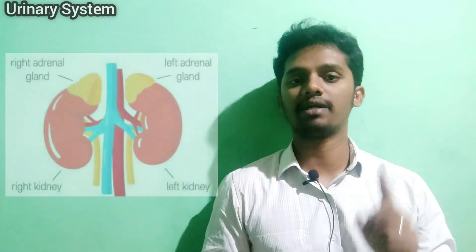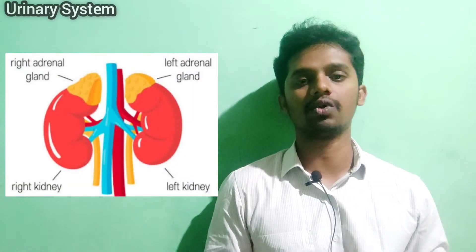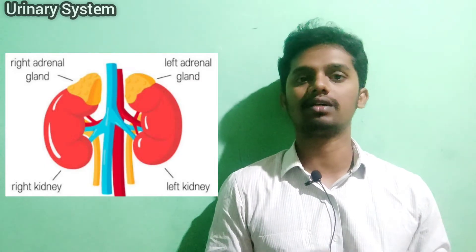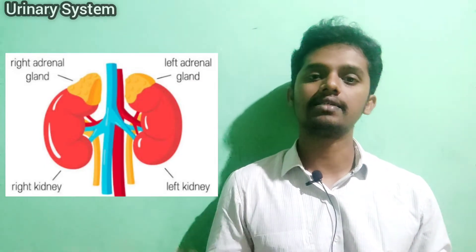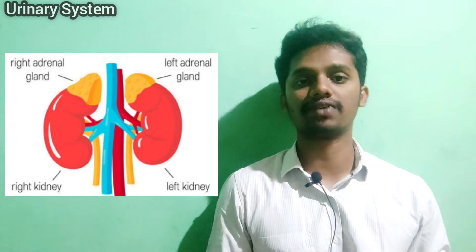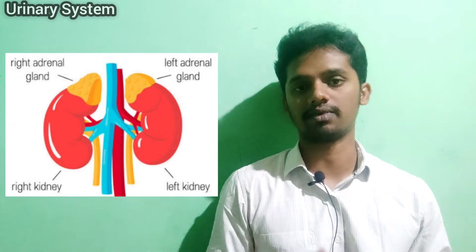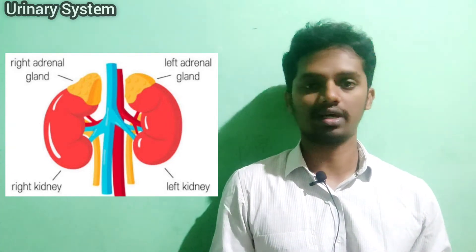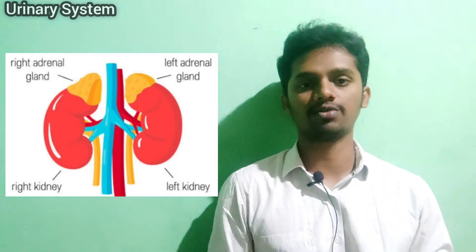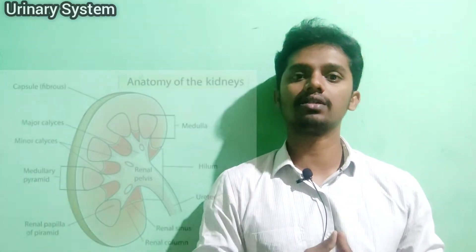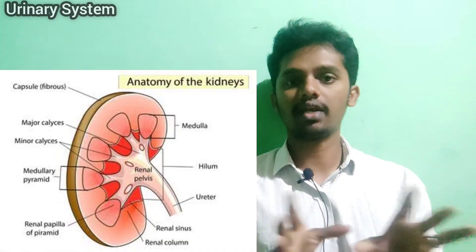On top of each kidney there is an adrenal gland, which is part of the endocrine system. Now let's look at the inner anatomy — the actual internal anatomy of the kidney.